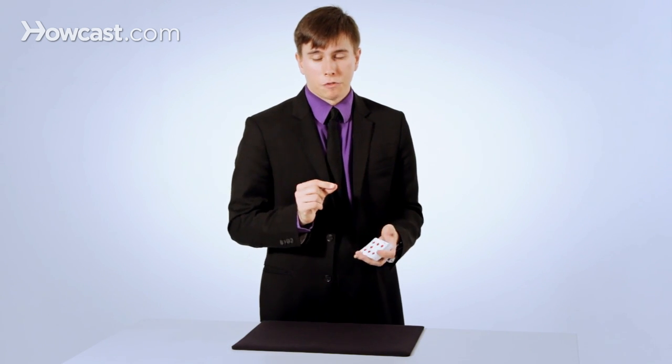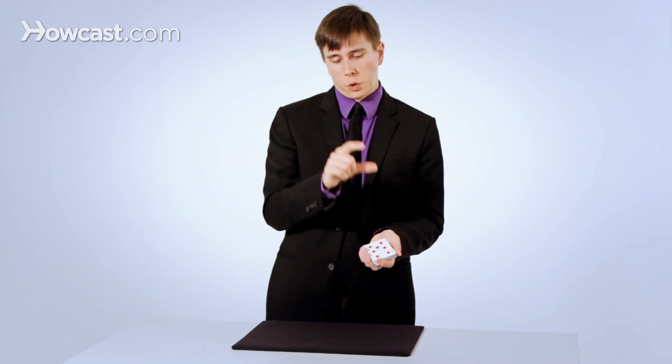If you do eight perfect out-ferros, the deck will maintain its perfect order. So if you had a deck going ace through king all the way through, and you did eight perfect shuffles, it will be back into new deck order. It's a cyclical mathematical stack. But if you were to do in-ferros, you would need to do literally 52 of them to maintain the original stack.